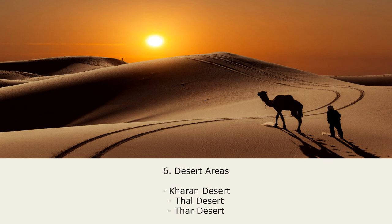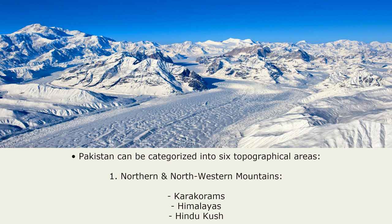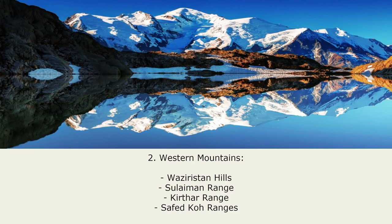There are six major natural topographical areas in Pakistan. Number one: Northern and Northwestern Mountains, where Karakoram, Himalayas and Hindu Kush are located. Number two: Western Mountains, which include four mountain ranges — Waziristan Hills, Suleiman Range, Kirthar Range and Safed Kuh Ranges.